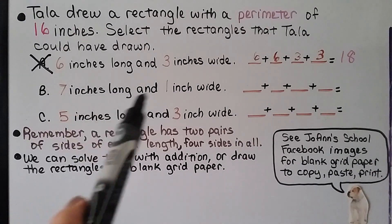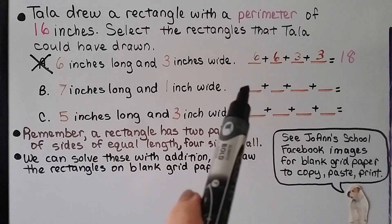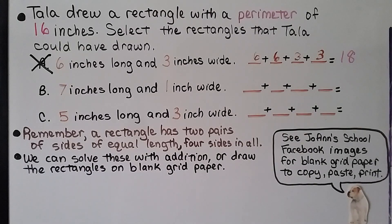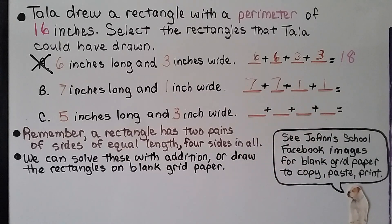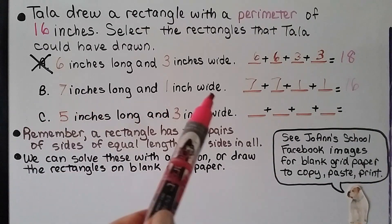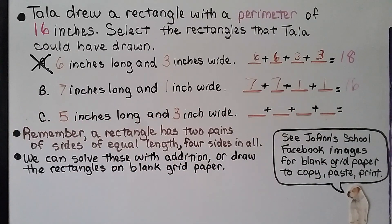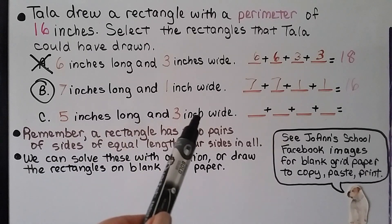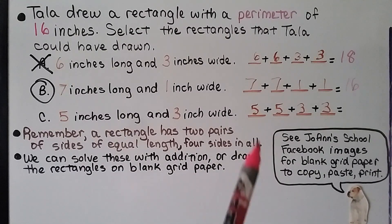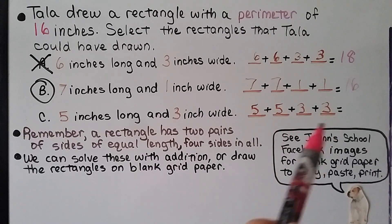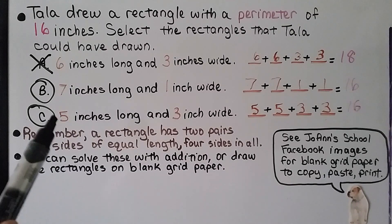For B, with 7 inches long and 1 inch wide, we put a pair of 7s and a pair of 1s. We add 7 plus 7, that's 14, plus 1 plus 1 equals 16. That equals 16, so B can be one of the rectangles Tala could have drawn. For C, 5 inches long and 3 inches wide: 5 plus 5 is 10, and 3 plus 3 is 6; 10 plus 6 equals 16. So C also could have been a rectangle she drew.